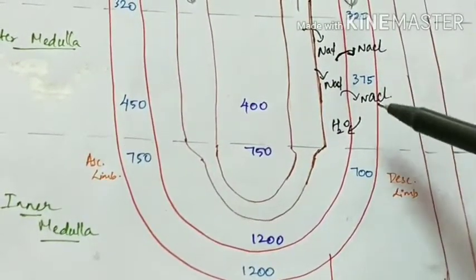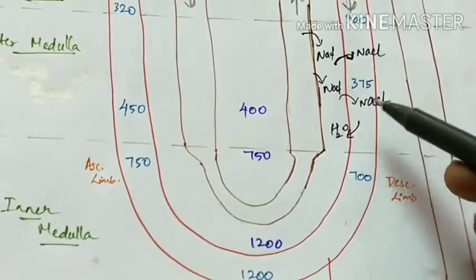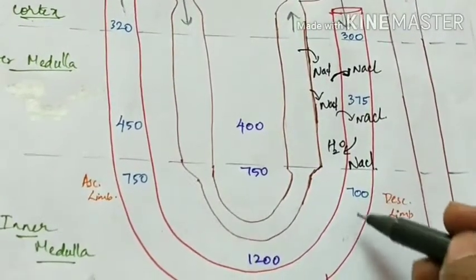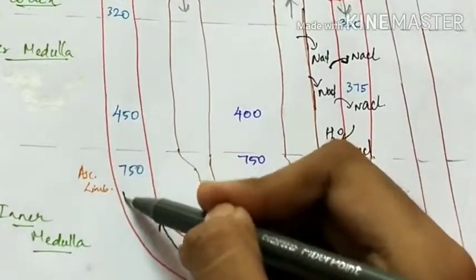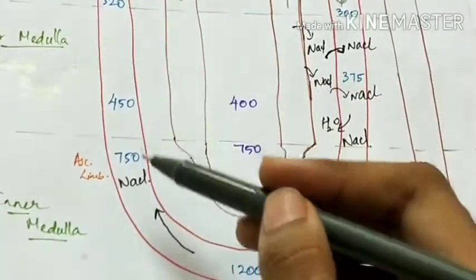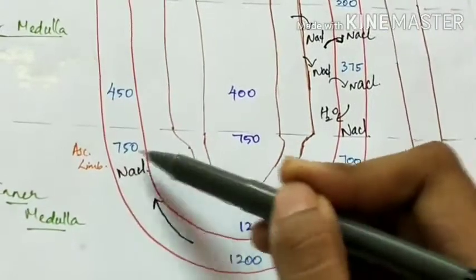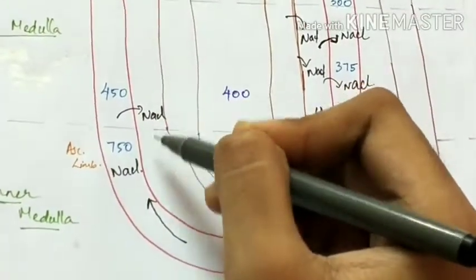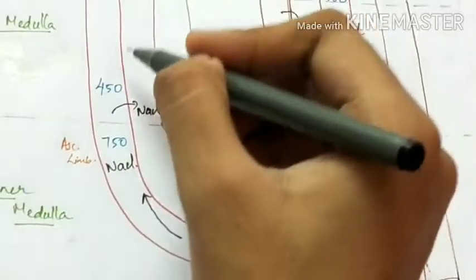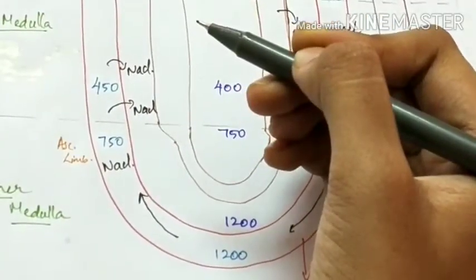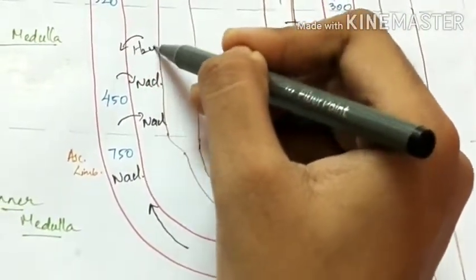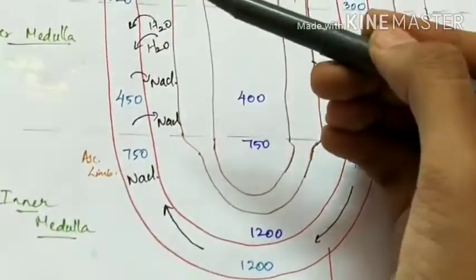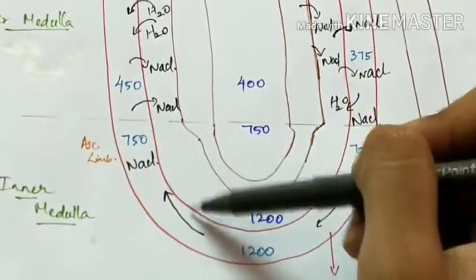The blood flows very slowly through the Vasa Recta, so a large amount of sodium chloride accumulates in the descending limb, and it flows very slowly to the ascending limb of Vasa Recta. Here, as the blood is more osmolar and more concentrated, there is diffusion of sodium chloride into the medullary interstitium from the ascending limb of Vasa Recta due to concentration gradient, and water is also taken in to dilute it. So sodium chloride diffuses into the medullary interstitium and water from the medullary interstitium enters the ascending limb of Vasa Recta. This cycle is repeated.